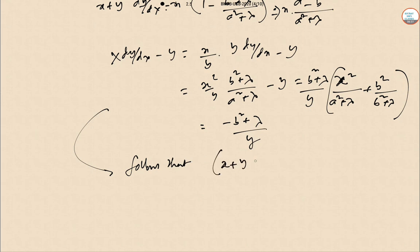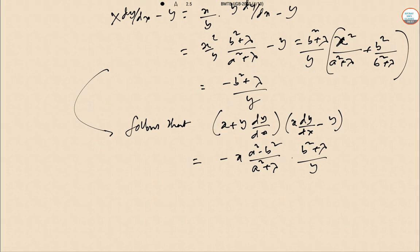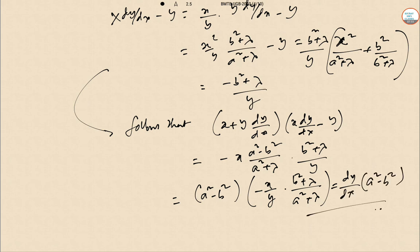(x + y(dy/dx))/(x(dy/dx) - y) equals minus x times (a²-b²)/(a²+λ) times (b²+λ)/y. Once we put it, the final value comes in as (a²-b²) times (-x/y), so it is actually satisfying (a²+λ). So dy/dx times (a²-b²) is the answer.